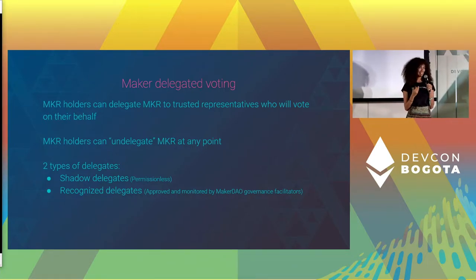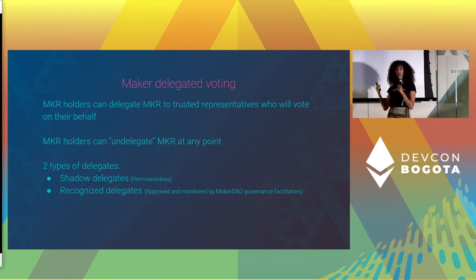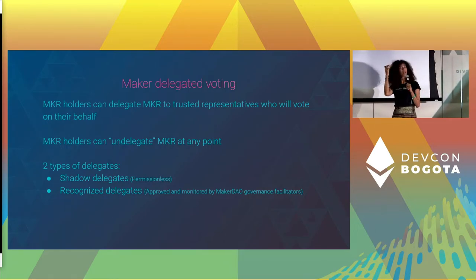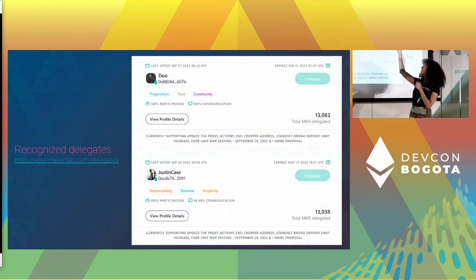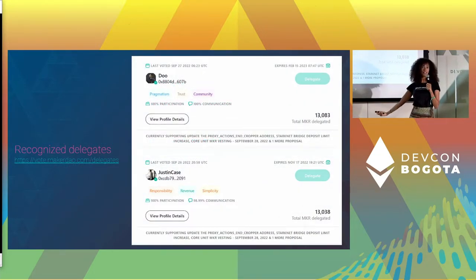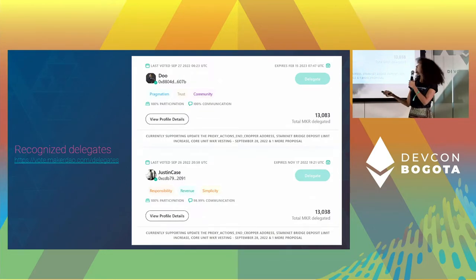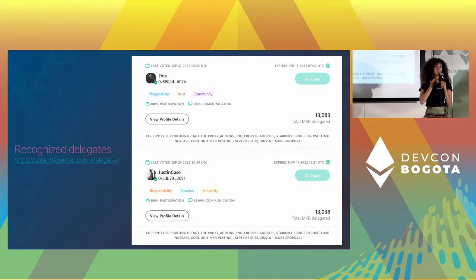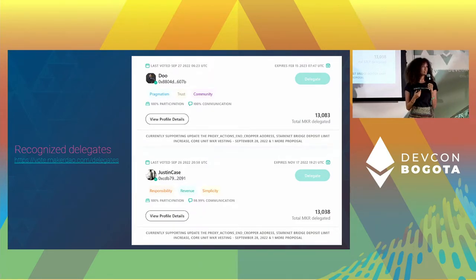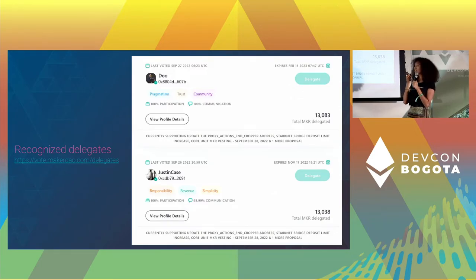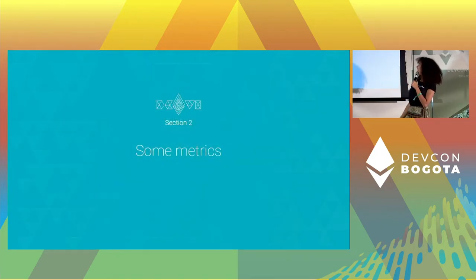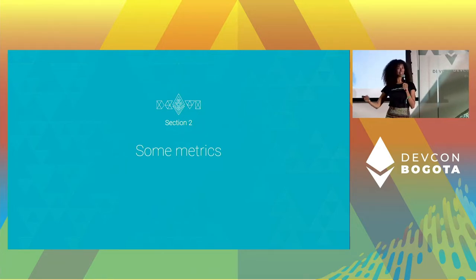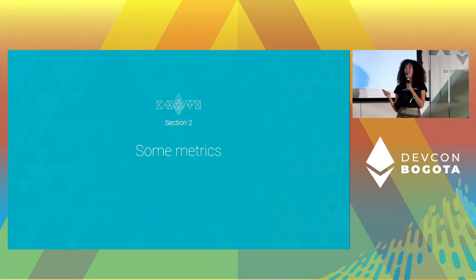But there are also recognized delegates, which are monitored by the governance core units, and we can see some information about them. This is an example of the two biggest delegates in MakerDAO — you can see how much they participate in votes, how much they communicate on the forums, how many tokens are delegated to them, and so on. There is this transparency and oversight from an authority that is the governance core unit. So now that we know what it is, let's look at how it's impacted the community and the governance.